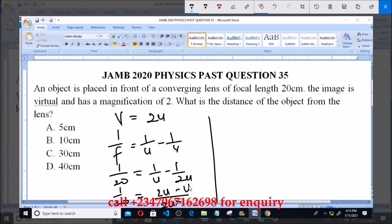So we have 1 over 20 equals u all over 2u squared. Now, when you cross multiply, you have 20u equals 2u squared.